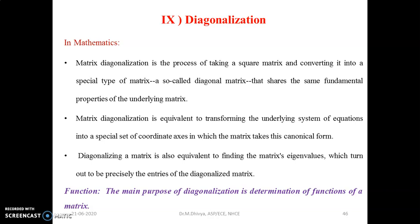Before getting into diagonalization in state space analysis, let us look at diagonalization in terms of mathematical concepts. Matrix diagonalization is the process of taking a square matrix and converting it into a special type of matrix called a diagonal matrix that shares the same fundamental properties of the underlying matrix.